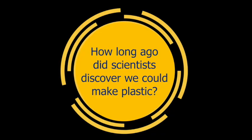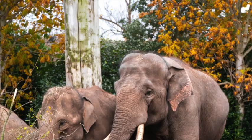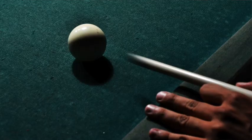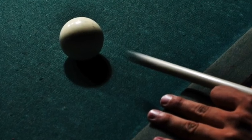So let's get back to our topic for today — the history of plastic. Humans have been living on this planet for about 200,000 years. Do you know how long ago it was that scientists discovered we could make plastic? In the middle of the 19th century, scientists began to explore different ways they could make a plastic-like substance. They were trying to find something they could use instead of ivory from elephants' tusks in order to make snooker balls.